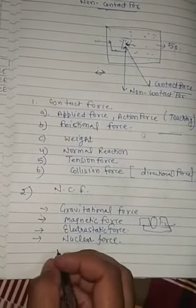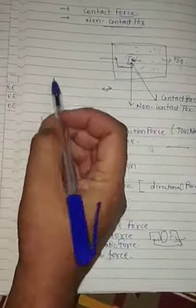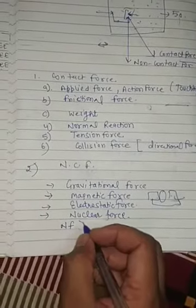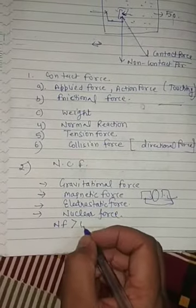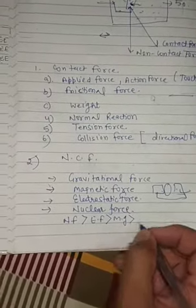Now I'm arranging all these forces according to their strength. Nuclear force is the strongest but very short range. It's between protons, neutrons and electrons in the nucleus. After that comes electrostatic force between charged particles. Then magnetic force, which is a bit weaker. The weakest is gravitational force. You can overcome it.